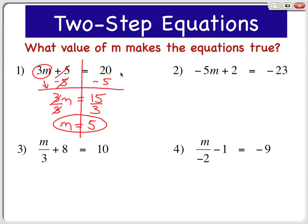Let's try again. Number 2 is a very similar problem, negative 5m plus 2 equals negative 23. Once again, the left side has the variable, so we're going to start over there.